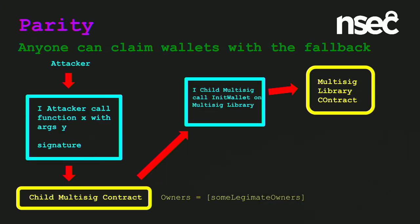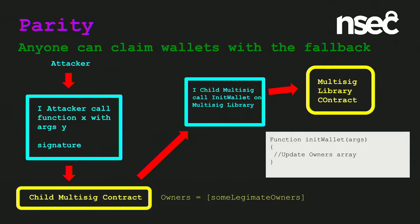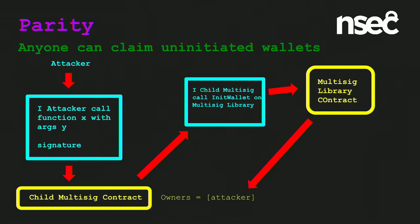Parity uses a child-parent library contract architecture — the child has most calls delegated to the parent library where the actual code lives. The attack starts with the attacker calling the fallback function on the vulnerable child, which passes whatever it was called with on to the parent via a delegate call. A delegate call is a special kind of call that executes the parent's code but on the child's state. The attacker calls init_wallet, which updates the owners array. The coding error is really simple — just a missing keyword. init_wallet should have been marked as internal so only the library could call its own init_wallet function. The attacker overwrites the owners with their own address and withdraws all the funds.